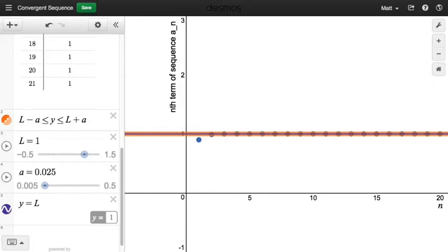beginning with n equals 2, and I'm going to write this as capital N, actually, capital N equals 2, that for all n greater than or equal to 2, it's true that the distance between a_n and 1 is less than 0.025.